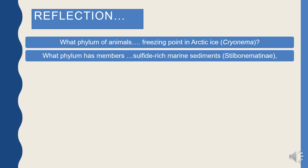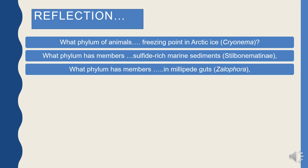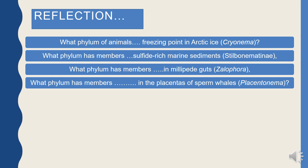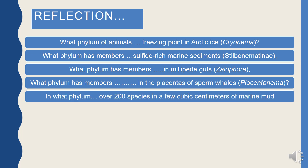What phylum has members that live in sulphide-rich marine sediments? What phylum has a member found in the millipede's gut — millipedes are arthropods. What phylum has members found in the placenta of the sperm whale? The sperm whale is a mammal related to chordates, and parasites are found in its placenta.